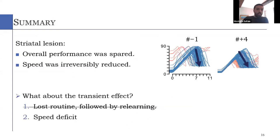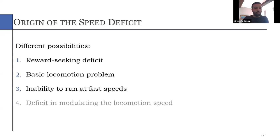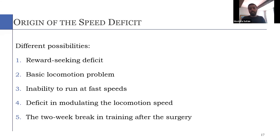So the first argument does not seem to be the case. So another alternative is that maybe this is also due to the speed deficit that we saw. Meaning that in the first session after the lesion, animals had a bigger speed deficit that recovered a little bit afterwards, not completely. So to understand better the origin of this speed deficit, we consider different possibilities. It could be due to a reward seeking deficit or a basic locomotion problem. Or maybe animals just cannot run. Or maybe they cannot control the locomotion speed.